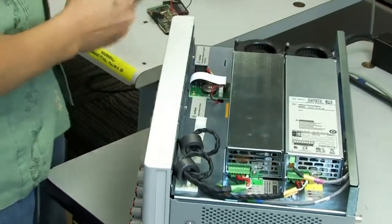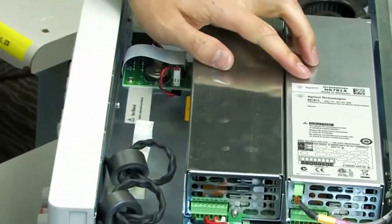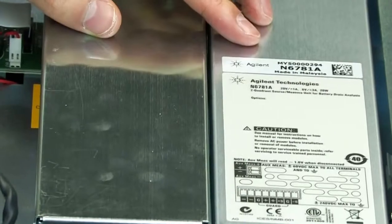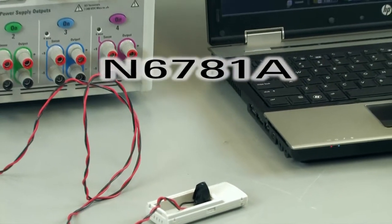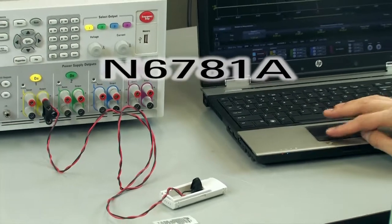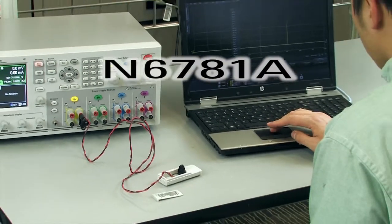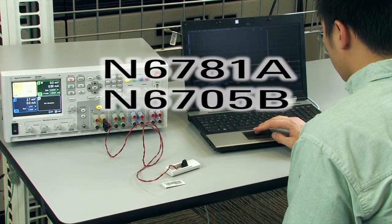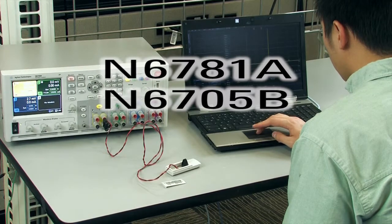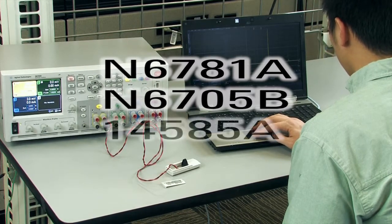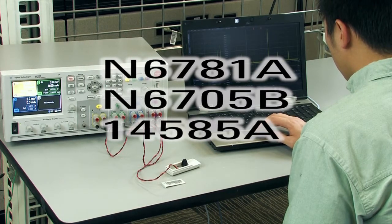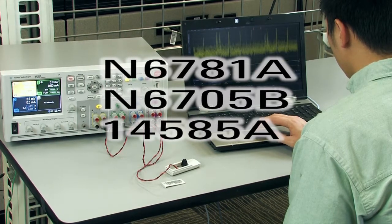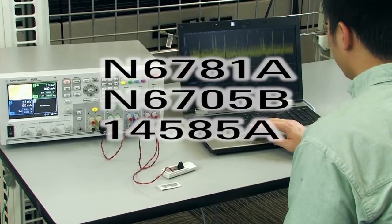Agilent Technologies has a DC source designed specifically to solve this difficult measurement task. The N6781A Source Measure Unit is tuned for battery drain analysis. When combined with an Agilent N6705B Series mainframe and 14585A software, it gives you superior insight into the nature of the dynamic current drain being demanded by the mobile device.